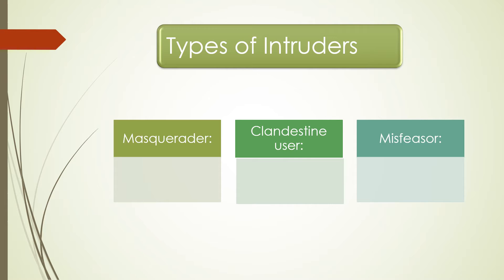The masquerader is likely to be an outsider. The misfeasor is generally an insider, and the clandestine user can be either an outsider or an insider. Intruder attacks range from the benign to the serious. At the benign end, there are many people who simply wish to explore the internet. At the serious end are individuals attempting to read privileged data.